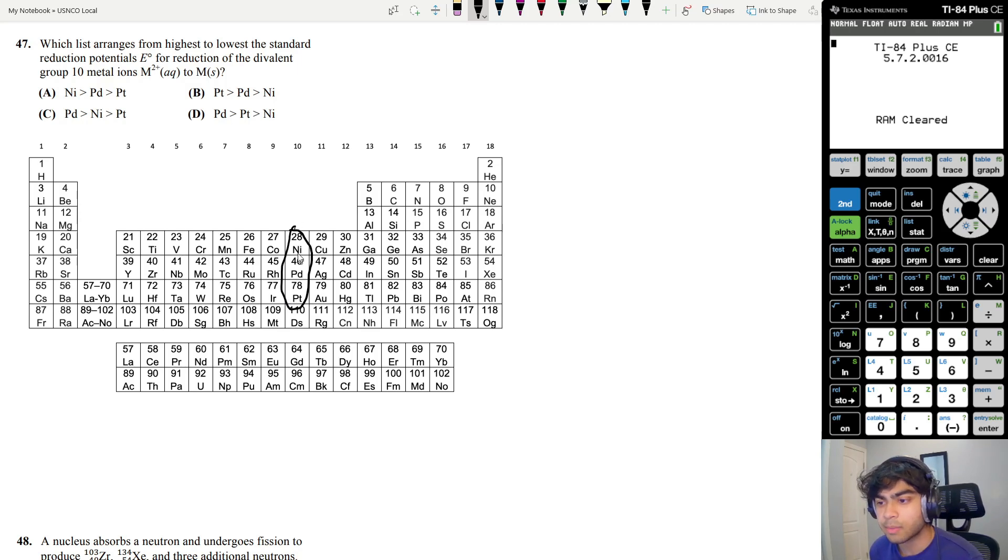The answer choices are referring to three different elements, and they're all in the same column. As you go down the periodic table, you increase the number of protons. If you have a higher positive charge in the nucleus, that makes it easier for it to attract new electrons. So platinum is going to be able to most easily pick up new electrons, and therefore most easily be able to be reduced. Therefore, it's going to have the highest reduction potential. So the order is going to be platinum, palladium, then nickel. Answer choice B.